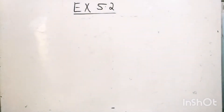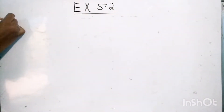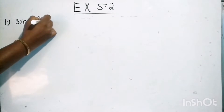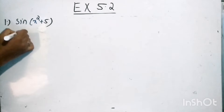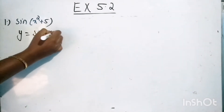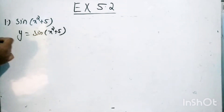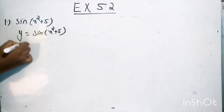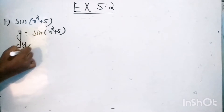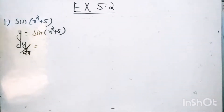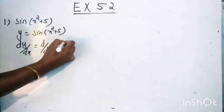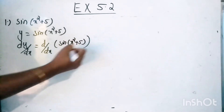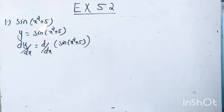We need to differentiate the functions with respect to x. The first question is sine of x square plus 5. So I am going to take it as y is equal to sine of x square plus 5. We need to find out the derivative of y with respect to x, so we will write it as dy by dx. Hence, dy by dx is equal to the derivative of sine of x square plus 5.